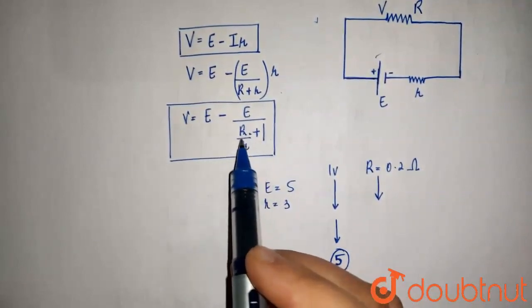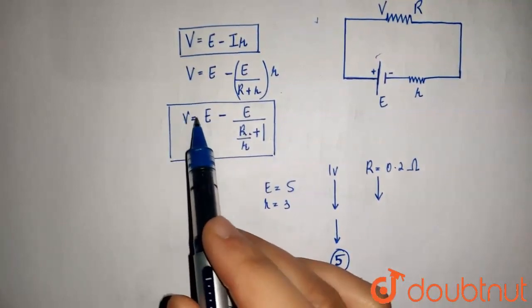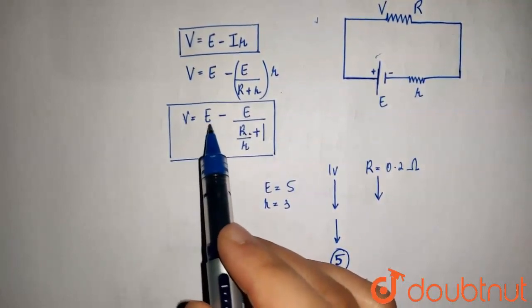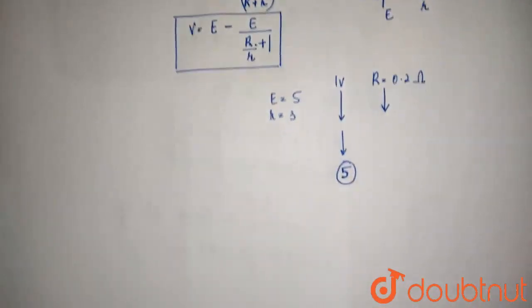That is, when the value of R is so large, only then this potential difference will be equivalent to the EMF of the cell. Which, in this case, was 5. So, let's plot a graph.